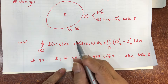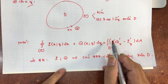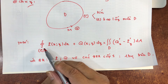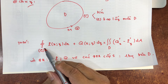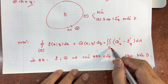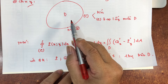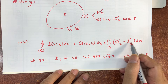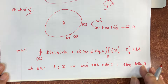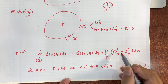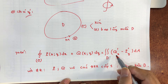Ý nghĩa của công thức Green là cho chúng ta một mối liên hệ giữa tích phân đường loại 2 trên đường cong kín C với tích phân kép trên miền D của các đạo hàm riêng — cụ thể là ∂Q/∂x trừ ∂P/∂y. Cho chúng ta mối liên hệ giữa hai vấn đề: tích phân đường loại 2 và tích phân kép của hàm hai biến số trên miền D.